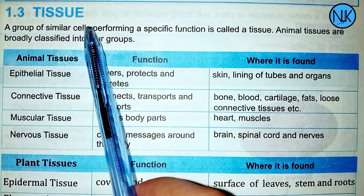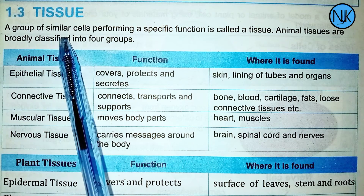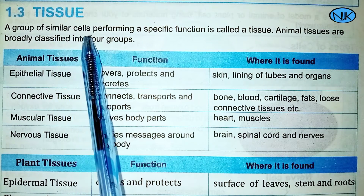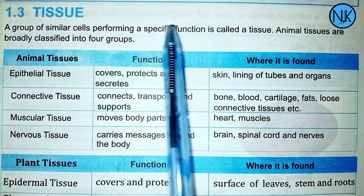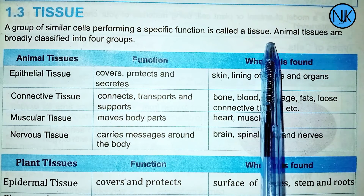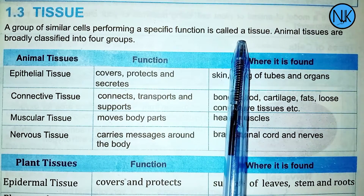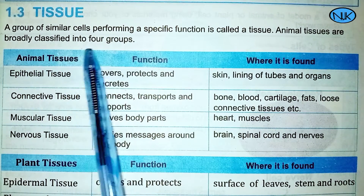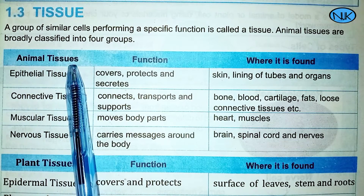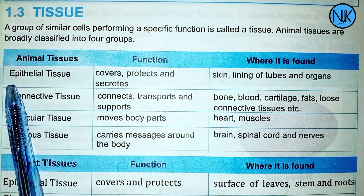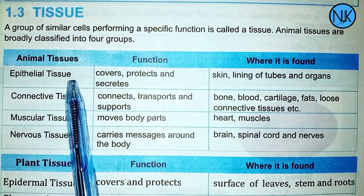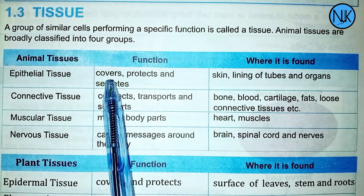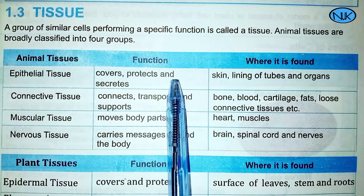Now we have tissue. Tissue is part of the body — a group of similar cells performing a special function is called a tissue. The animal tissues are classified into four groups. Epithelial tissue has the function of covering, protecting, and secretion.